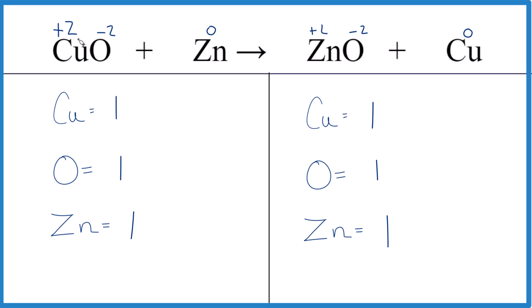So it looks like the copper goes from a two plus to a zero. So it gained two electrons. The copper gained electrons. It's been reduced.